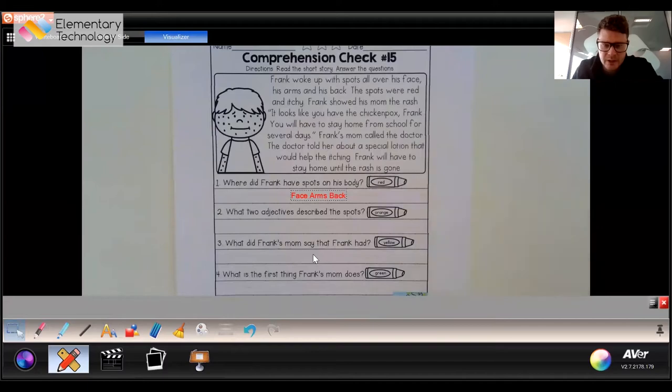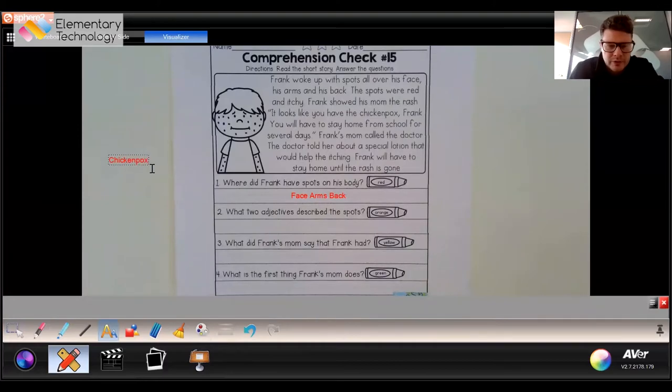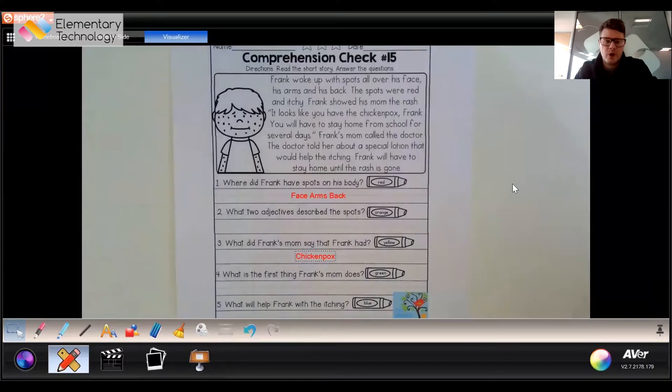We're going to use our labeling option here. You can see where the friend got spots on his body. It was his face, arms, and back. So once you've got your pupils to answer the question, you put it in there and we have an answer on an answer sheet as if you were doing it live. Really simple, really effective. You can keep going and search for the next question. Take a picture, save it into your class file which I'll show you in a moment.